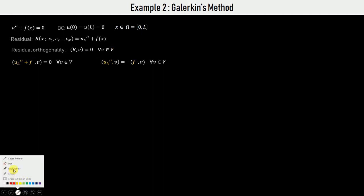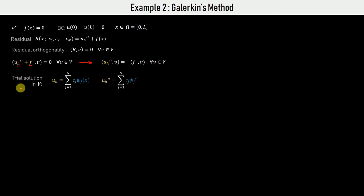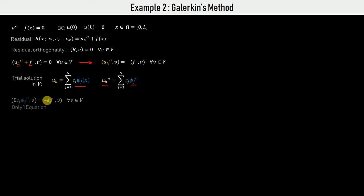Putting in the values of R into the orthogonality statement and separating the F term, we can write it in this form. We construct the trial solution as a linear combination, and the second derivative can be evaluated since C is constant — it is simply psi_j double dash.